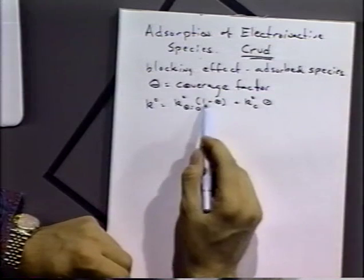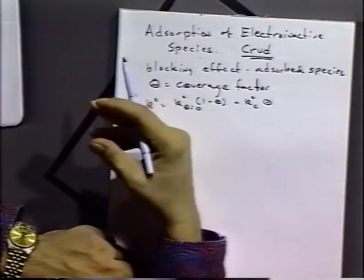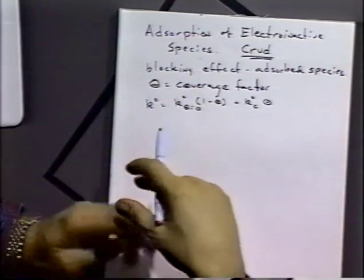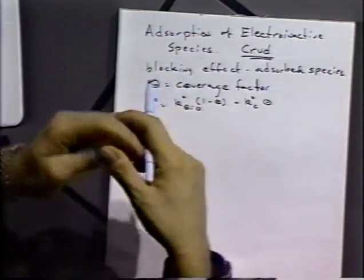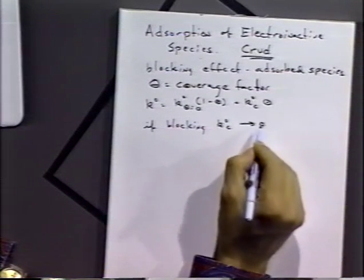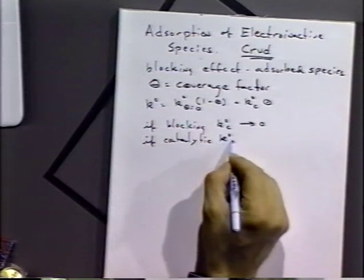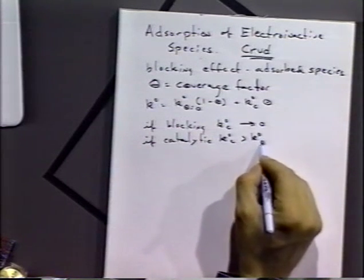Plus the K0 of the covered species times the amount of covered surface. In other words, the fraction that's not covered would have the normal K0, the fraction that's covered would have the K0 that would occur at the covered material. So even though something is absorbed, you can still get an electron transfer through that adsorbed layer. Typically that K0 is going to be smaller for an active species, but not always. Sometimes that adsorbed material may have a more rapid electron transfer rate. In this case, you'd get a catalytic effect. So if we have a blocking layer of adsorbates, K sub 0 sub C would be zero or very close to it. And you can get a catalytic layer, K0 C would be greater than K0 theta equals zero.